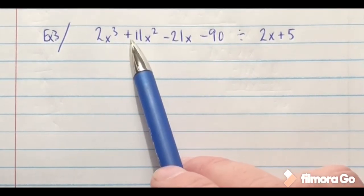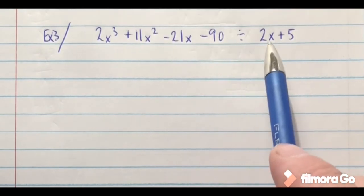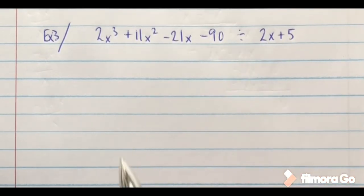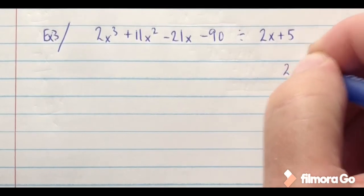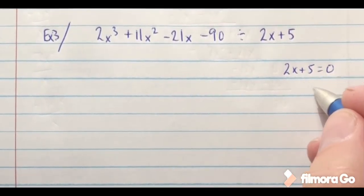Okay, let's take a look at one more synthetic division here. This is 2x to the third plus 11x squared minus 21x minus 90, and we're dividing by 2x plus 5. So again I'm going to take my 2x plus 5 and set it equal to 0.